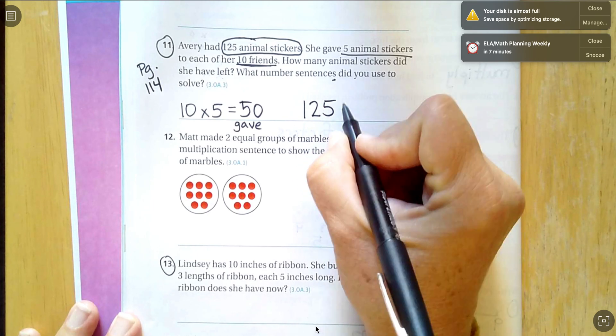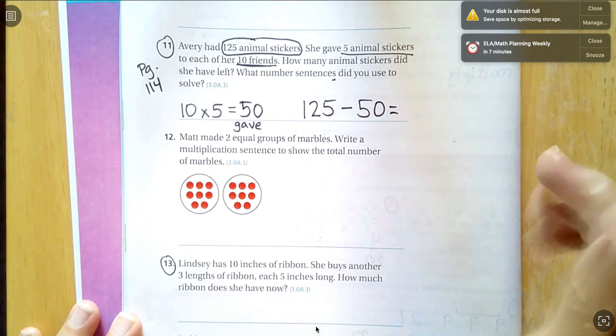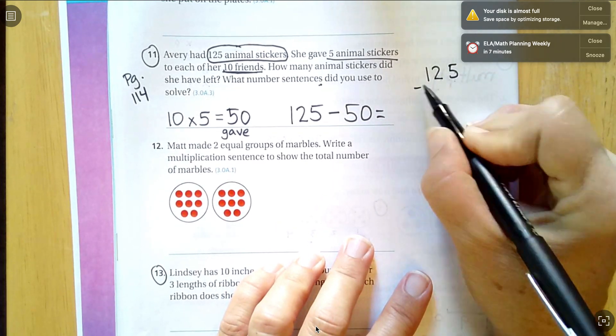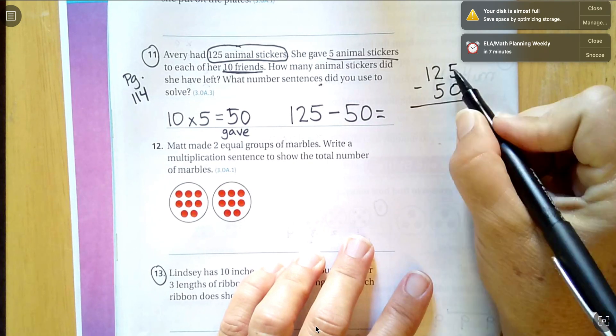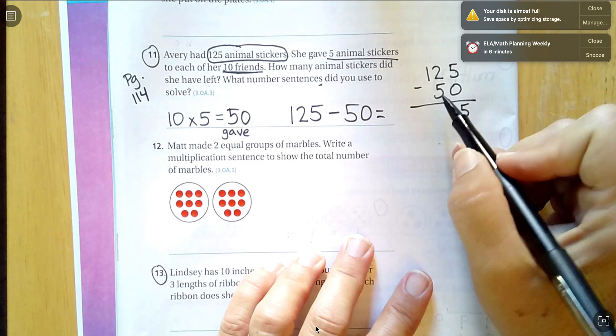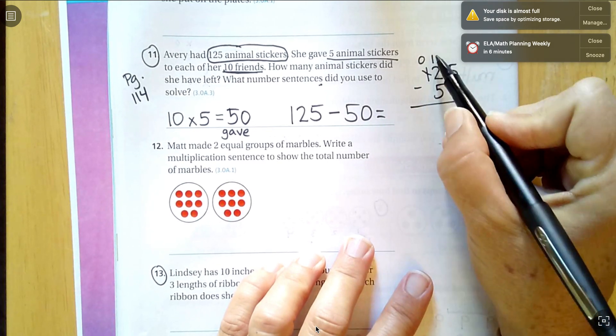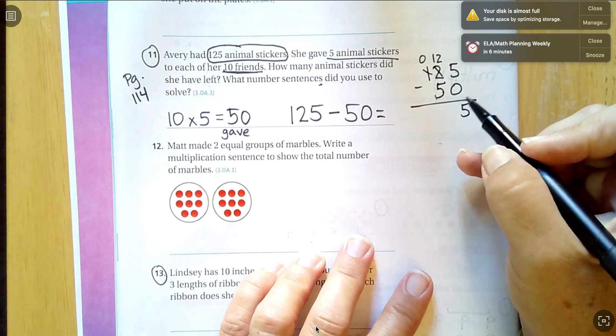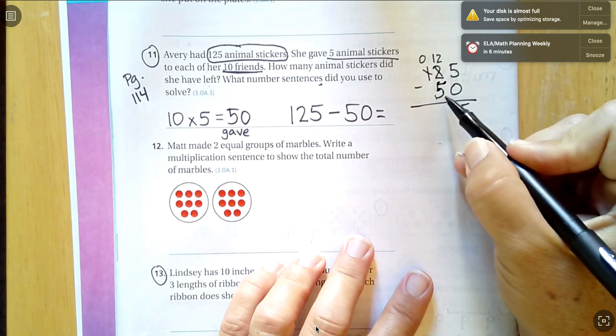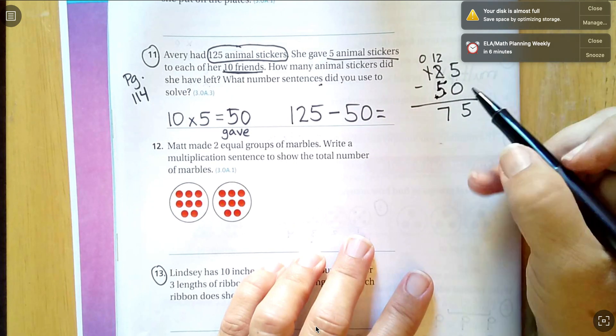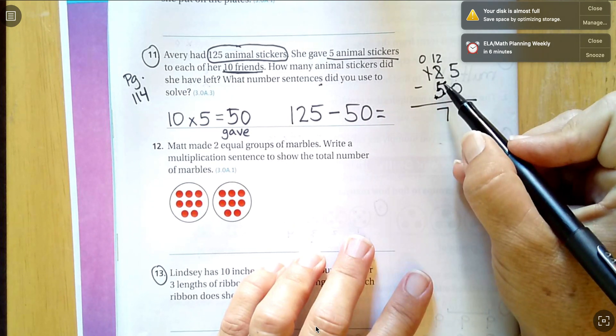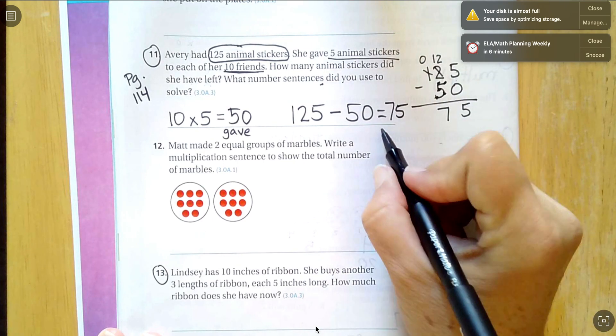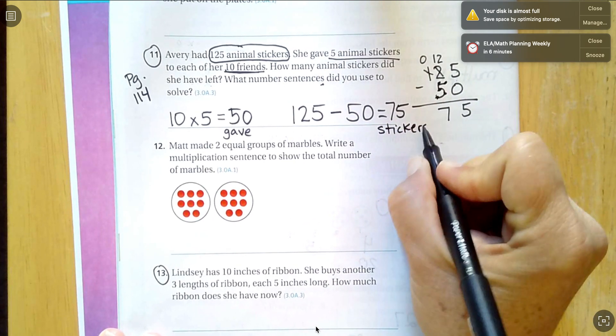I'm going to take 125 minus 50. And actually, I wrote it horizontally, but I know it's easier to stack it and line it up. So I'm going to rewrite it. 5 minus 0 is 5. I can't do 2 minus 5, so I have to borrow. Oh, it's just 12. So 7 plus 5 is 12, right? So I've got 125 minus 50 is 75. So she has 75 stickers left.